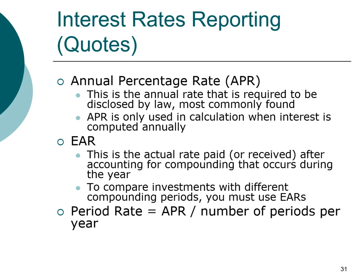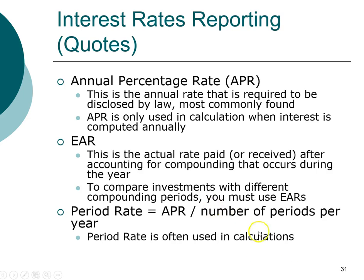Lastly, there is the period rate. This is the interest rate that we'll use in our calculations. Simply put, the period rate is the interest rate per period. For example, if you are given a quotation of 12% APR and the payment is monthly, then your interest rate per month is 12% divided by 12 months per year, or 1% per month. Keep in mind that 1% per month is the interest rate we'll actually use in calculations if payment occurs on a monthly basis.